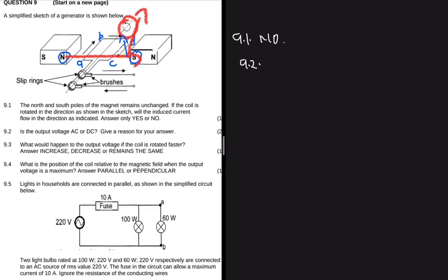And then let's move to 9.2. Question 9.2 says is the output voltage AC or DC? The output voltage will definitely be AC. Now why do we say that? We say that because of the presence of slip rings and not split rings. It's AC because we have slip rings and carbon brushes.